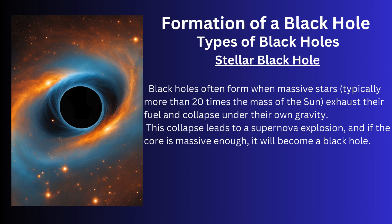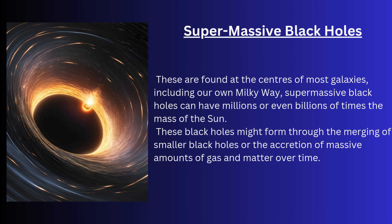There are two types of black holes: stellar black holes and supermassive black holes. Stellar black holes form when massive stars — typically more than 20 times the mass of the sun — exhaust their fuel and collapse under their own gravity, leading to a supernova explosion. If the core is massive enough, it becomes a stellar black hole. Supermassive black holes are found at the centers of most galaxies, including our own Milky Way, and can have millions or even billions of times the mass of the sun. These may form through the merging of smaller black holes or the accumulation of massive amounts of gas and matter over time.